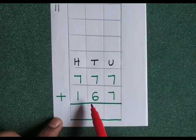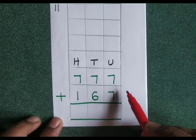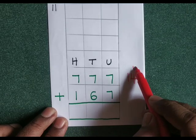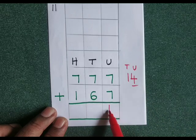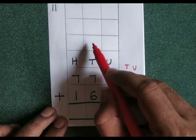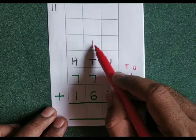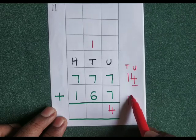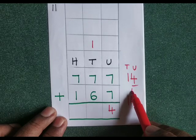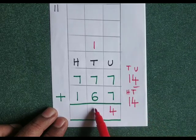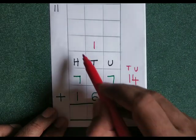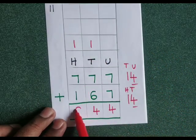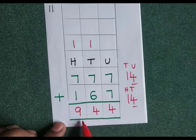177 plus 167. 7 plus 7 is 14. Write 4 at the units place, carry 1 to the tens place. 1 plus 7 is 8, 8 plus 6 is 14. Write 4 at the tens place, carry 1 to the hundreds place. 1 plus 1 is 2, plus 1 is 3. The answer is 344.